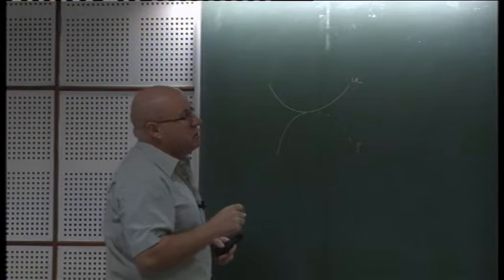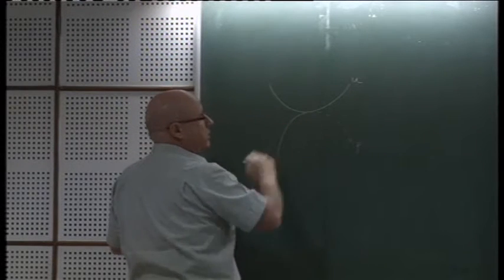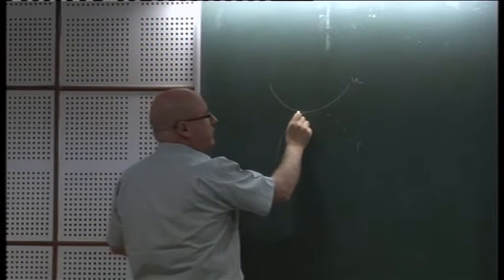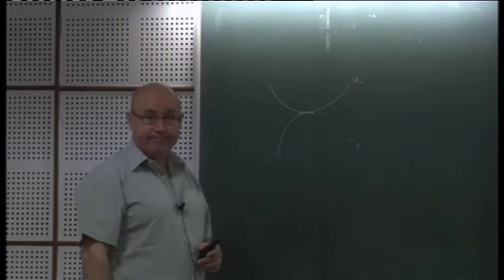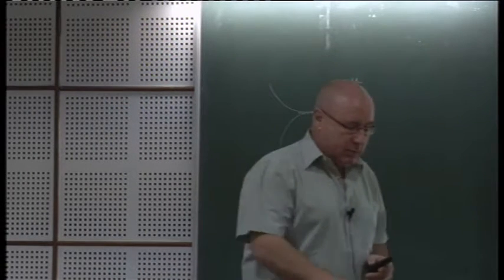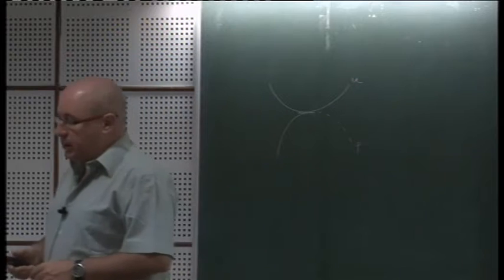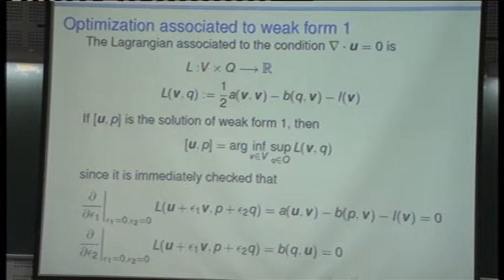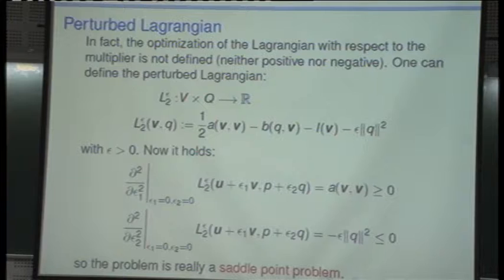Nevertheless, there is a maximum in p. The way to check that is by perturbing the Lagrangian, which is not definite in the p direction. This is analogous to functions of several variables in finite dimensions. So let's perturb the Lagrangian to make it definite. The way to do that is the so-called perturbed Lagrangian: you take the Lagrangian and add a small number multiplying the L2 norm of the multiplier. This is a standard technique of regularization of Lagrangians — it can be either the norm or any positive definite bilinear form of the multiplier.